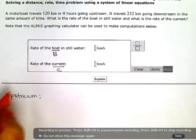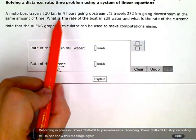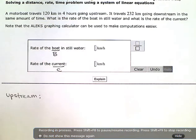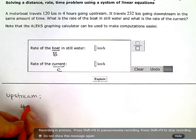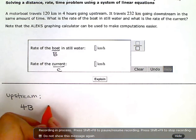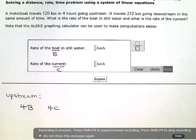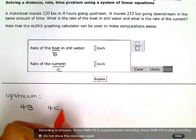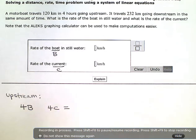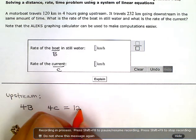So when I'm going upstream, my trip is four hours long. That means four hours that the boat is traveling and four hours that the current is pushing against it, against the boat. And at the end of the four hours, I traveled 120 kilometers.